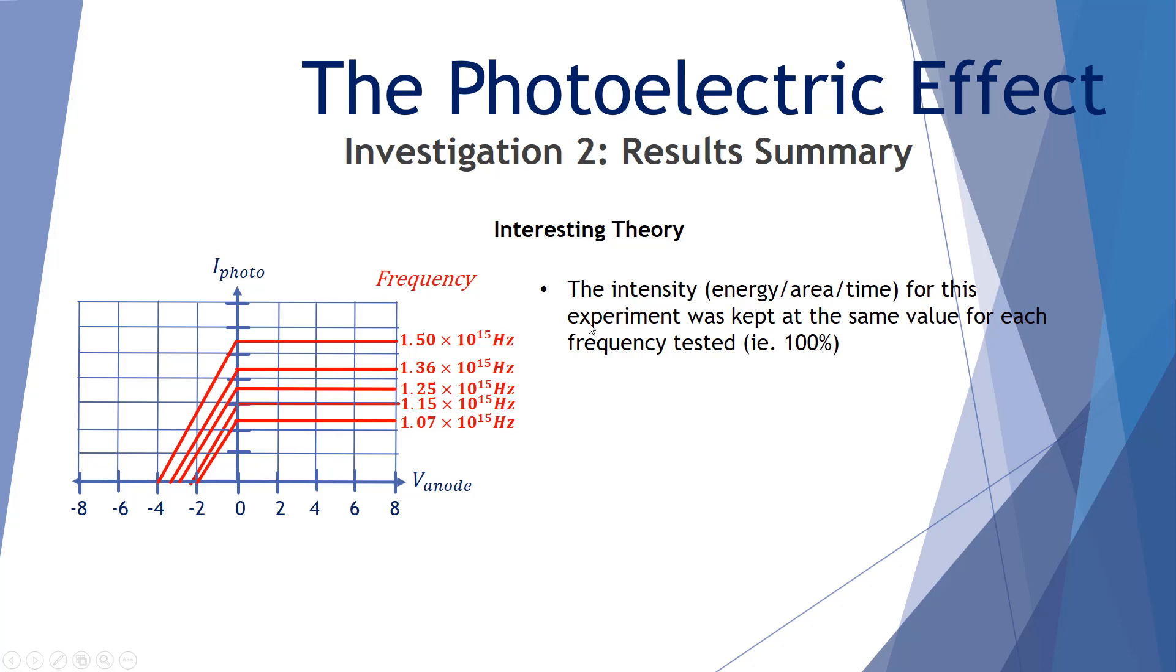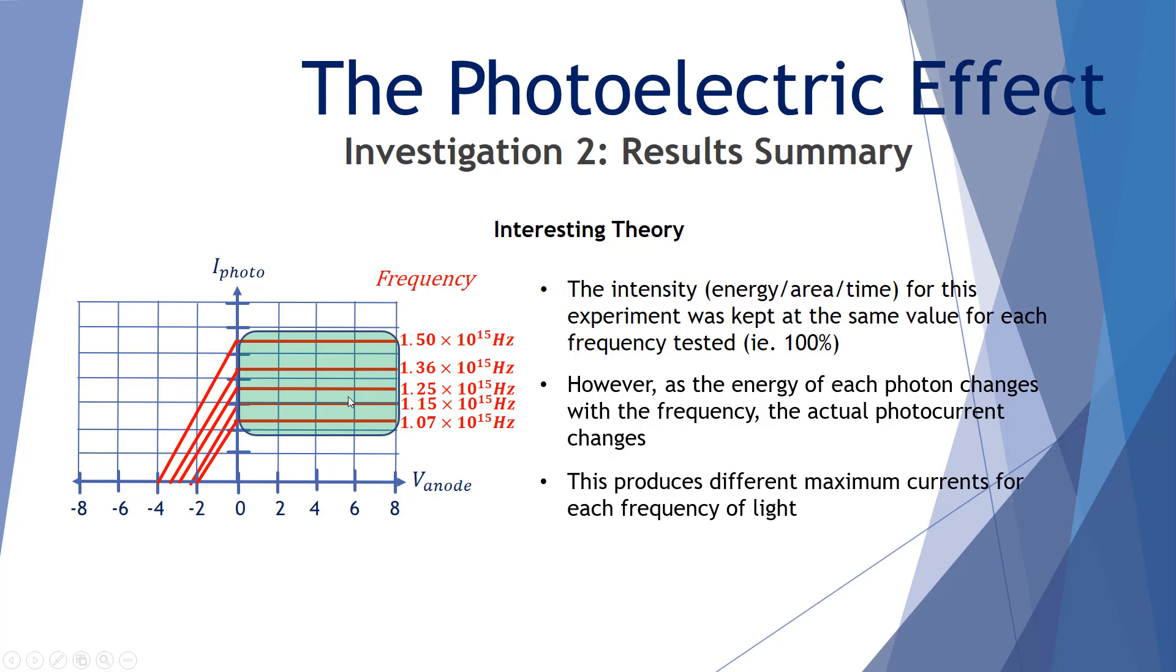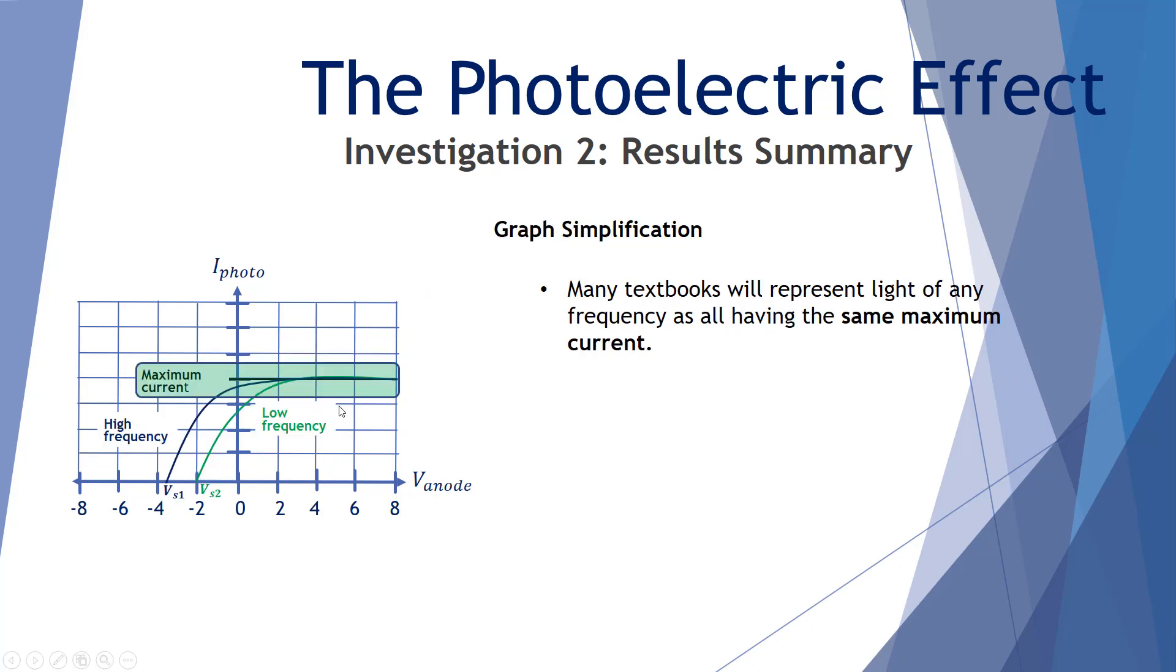Now, a little bit of theory explanation. In this investigation, we set the intensity of the light at 100%, and we kept it the same for every one of these frequencies. Just keep in mind that intensity really means the energy per area per time. However, as the energy of each photon changes with the frequency, which we'll learn in future lessons, E equals hf, the actual photocurrent will change. This produces a different maximum current for each frequency of light. So this is what happens in reality.